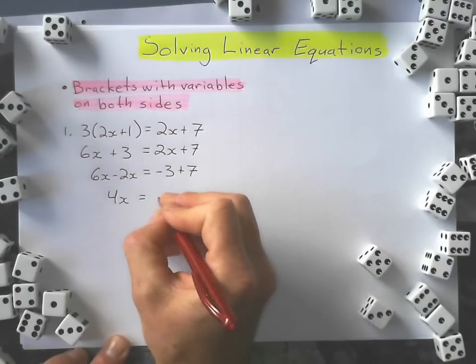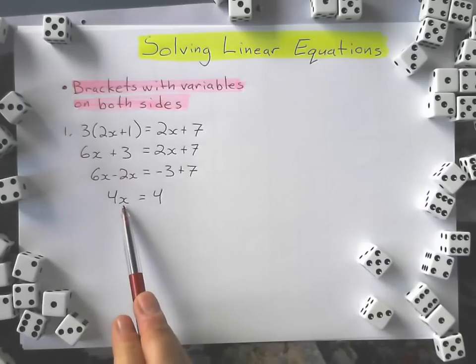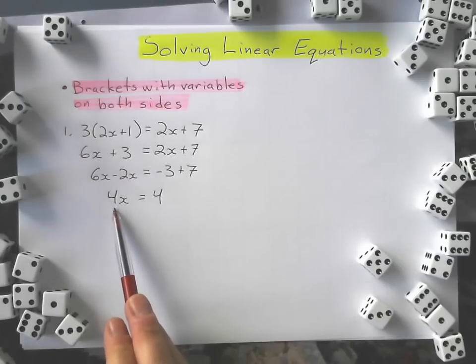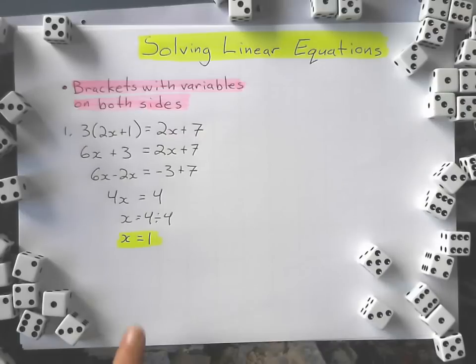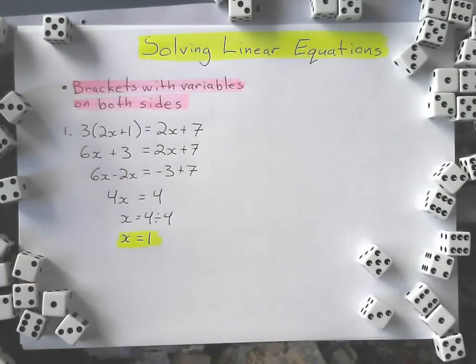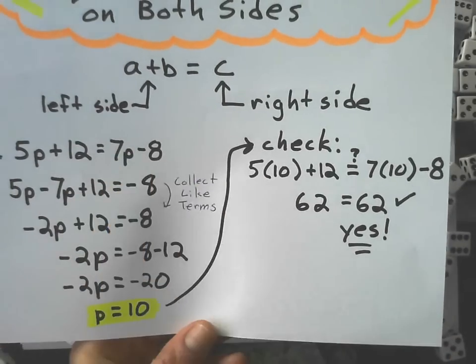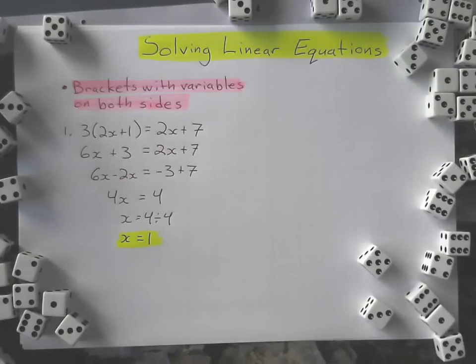Now I collect like terms: 6x minus 2x is 4x, and negative 3 plus 7 is positive 4. My last step is just going to be to divide by whatever the coefficient is, and the coefficient is 4 in this case, so we get x equals 1 for the solution, the value of the variable that makes the equation true. We can check it if we want to by taking our solution and substituting it back into the original equation if you have time to do that. Let's try another one.